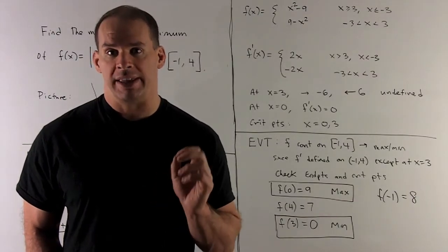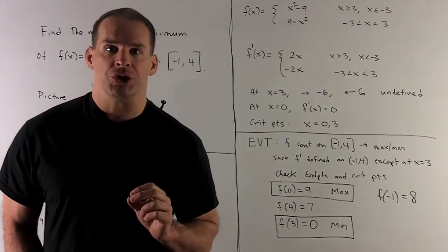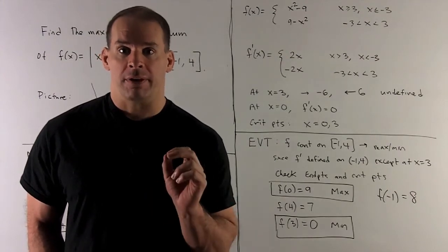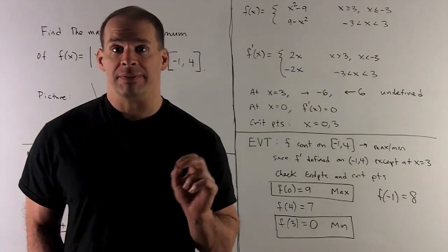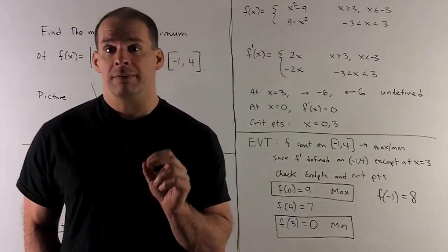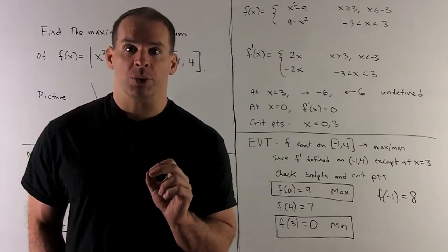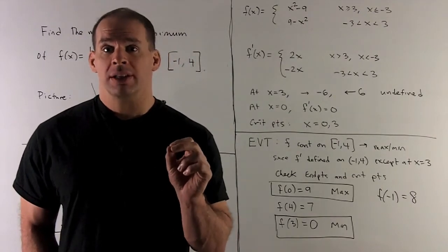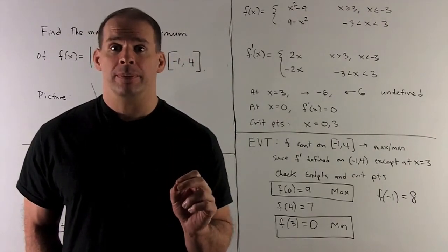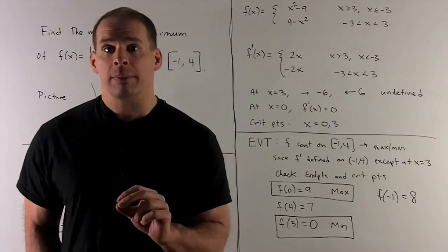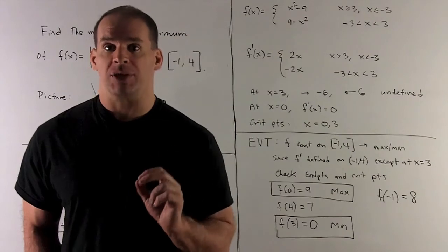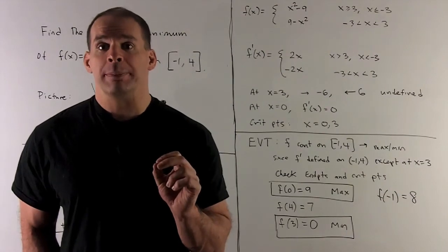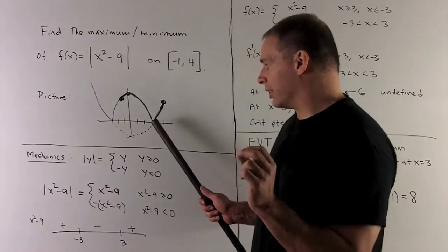Now we have f defined without absolute values. Our procedure: for a continuous function on a closed interval where f has a derivative everywhere except at finitely many points, first find the critical points — where the derivative equals zero or is undefined — then evaluate f at those critical points and the endpoints, and compare the values to find the minimum and maximum.